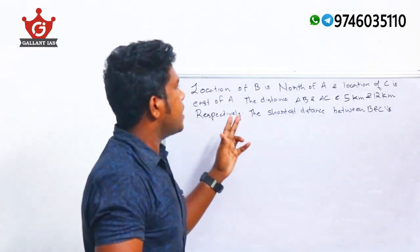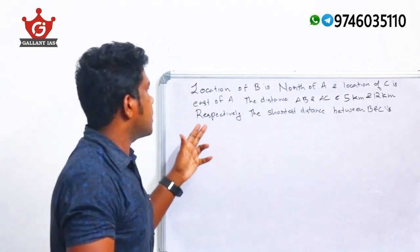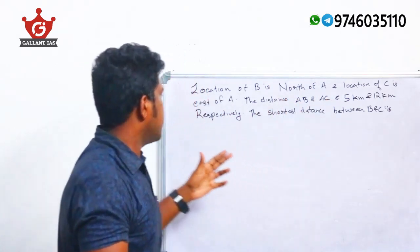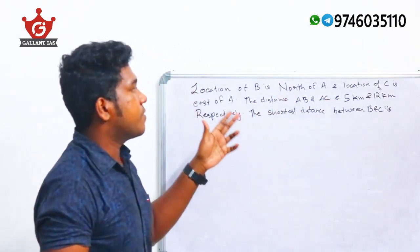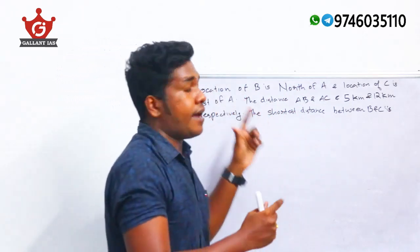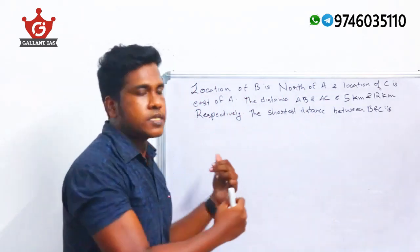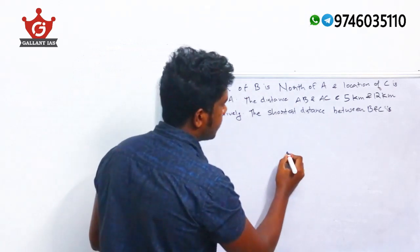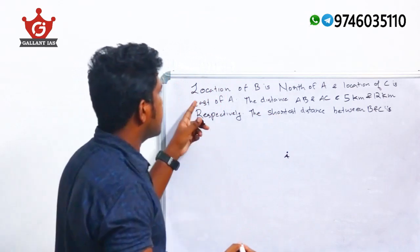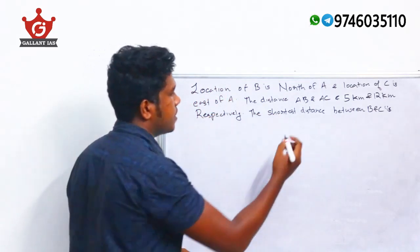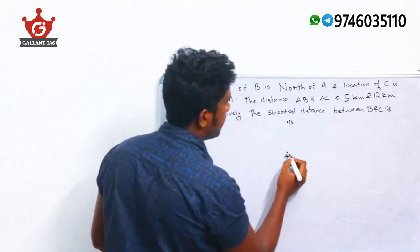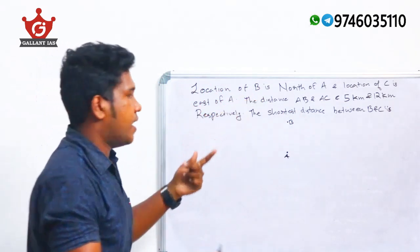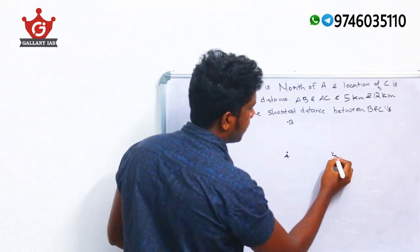Next question: The location of B is north of A, and the location of C is east of A. The distances AB and AC are 5 km and 12 km respectively. We need to find the shortest distance between B and C.